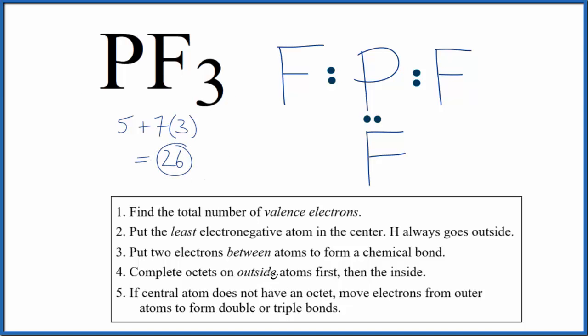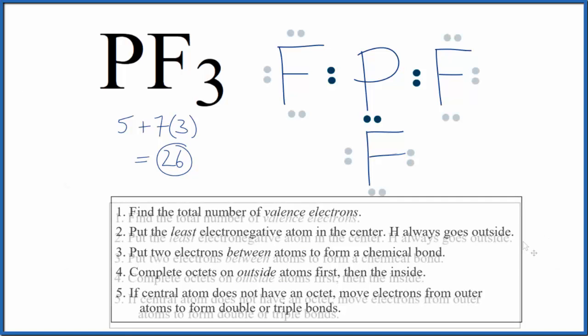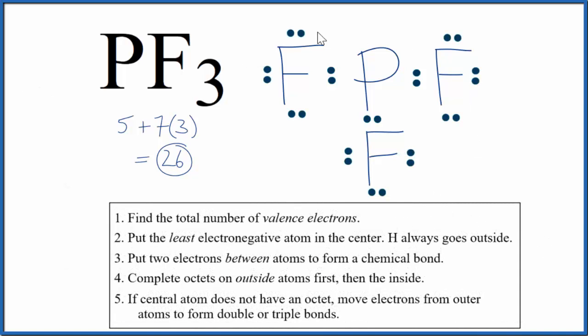So now we're going to complete the octets on the outside atoms first, on the fluorines. That looks like this. So far we've used 24 valence electrons, we have 26.